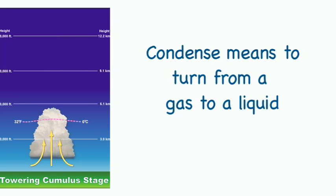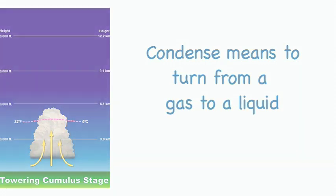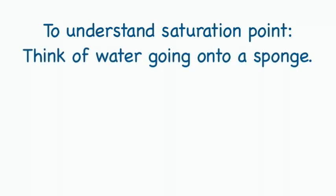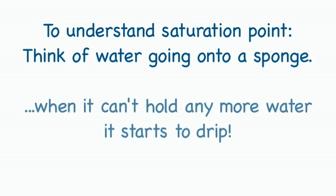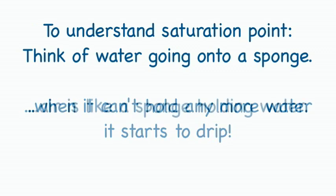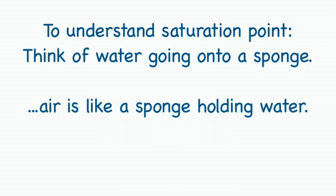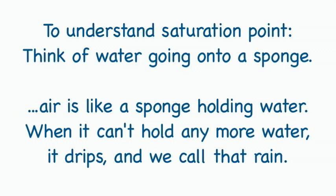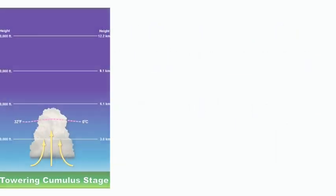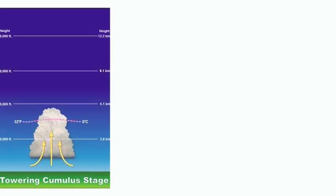A cloud forms when it's heated by the sun. As it rises, it slowly cools, reaches its saturation point, and then the water condenses forming a cloud. As long as the cloud and the air that it's made of is warmer than the outside air around it, it floats.